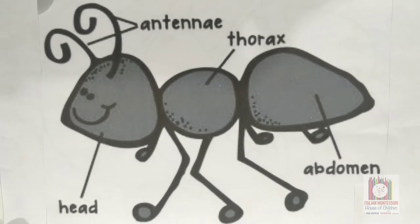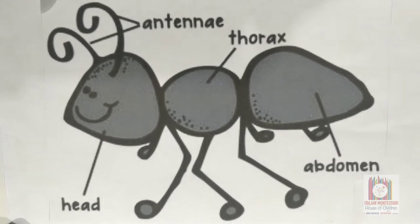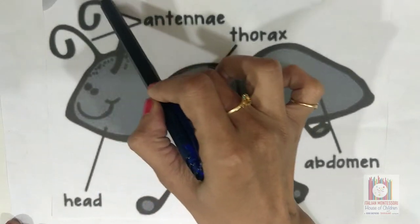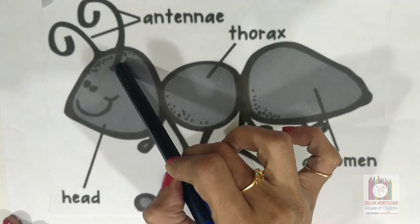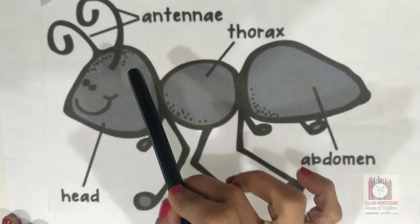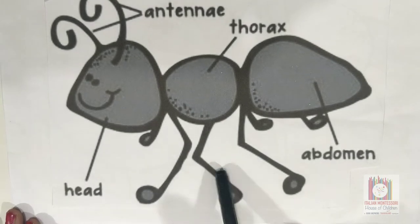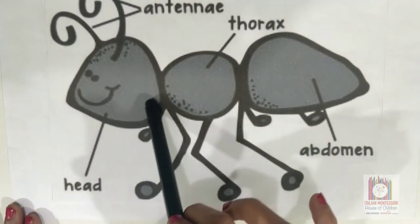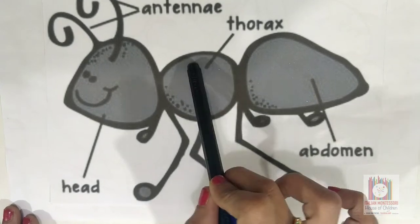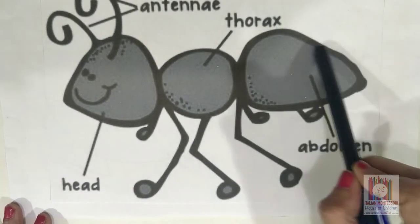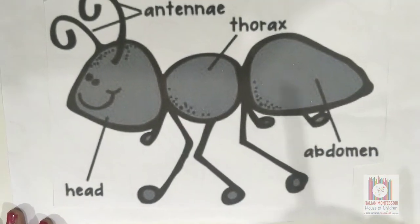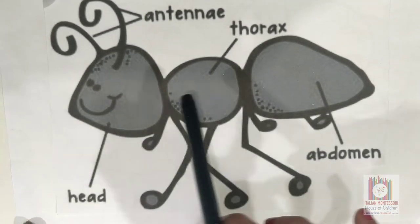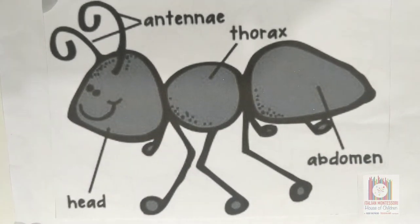Now let's see the parts of an ant. An ant has two antennas on the head, six legs, a head, thorax, and abdomen. The abdomen is bigger compared to the head and thorax.